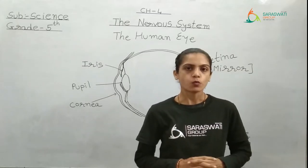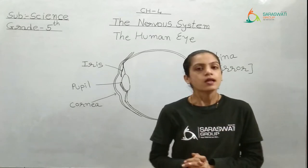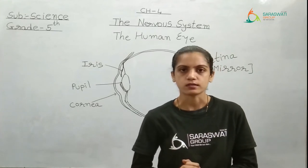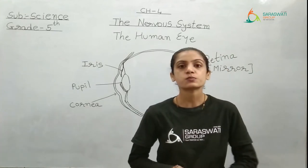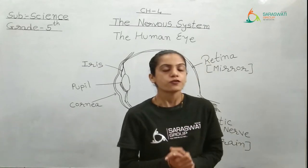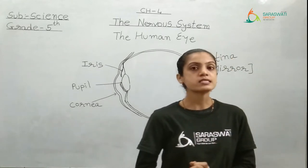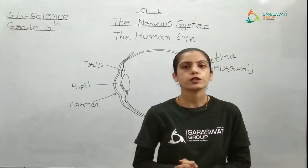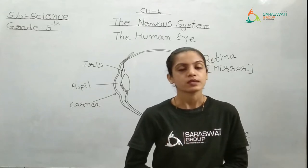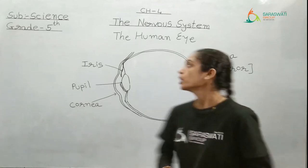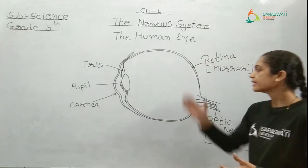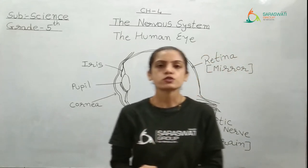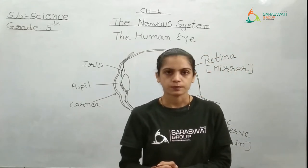As we have completed watching the reflex action video, we are moving to the next topic. The next topics are related to sense organs. We know that there are five sense organs in our body. Today, from those five sense organs, we are going to study about the one sense organ which allows us to see. That organ is the eye. As you can see, I have drawn the structure of the human eye on the board, and in your textbook the diagram is also given.